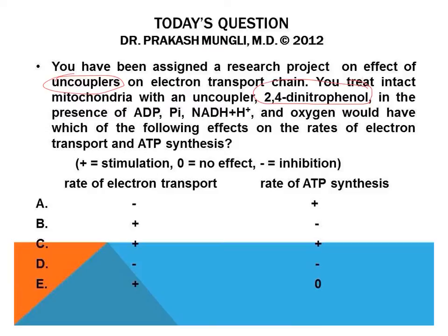In the presence of 2,4-dinitrophenol, ADP, Pi, NADH+H⁺, and oxygen — which of the following effects would be observed on the rates of electron transport and ATP synthesis? There are multiple choices from A to C covering various options, so let's determine the correct answer.